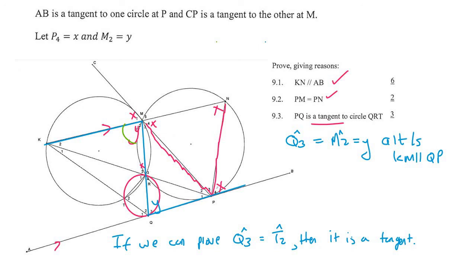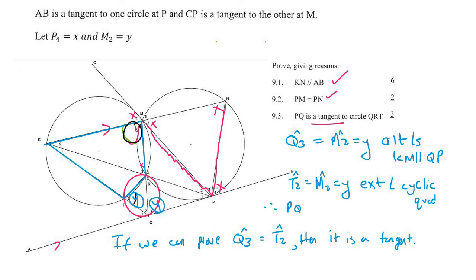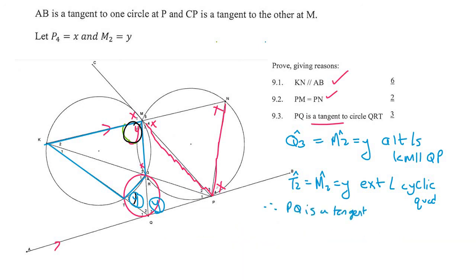Looking at cyclic quadrilateral KMRT, T2 is the exterior angle of that cyclic quad. So we can say T2 is equal to M2, which equals y, because it is the exterior angle of a cyclic quad. Since Q3 and T2 are both equal to y, they are equal to each other. Therefore PQ is a tangent by the converse of the tan-chord theorem.